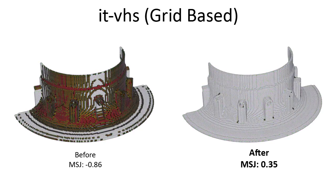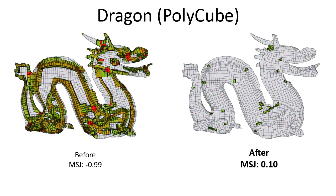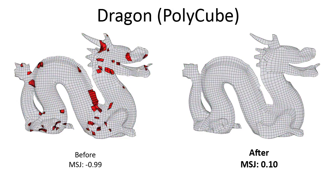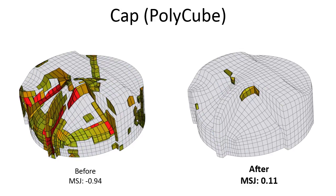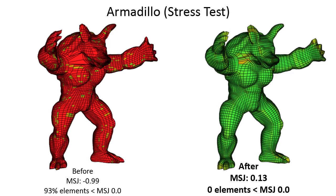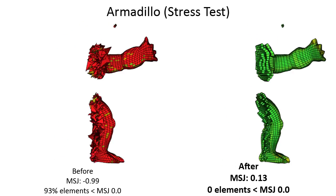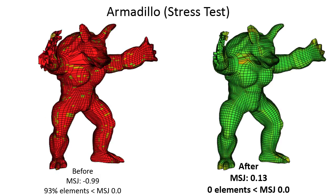Our method produces inversion-free, high-quality meshes starting from inputs generated by a range of meshing methods. In every case, our method produces high-quality, inversion-free results. We are able to successfully optimize inputs with extremely poor quality. In our experiments, we successfully generate inversion-free meshes from inputs with over 90% non-convex elements.